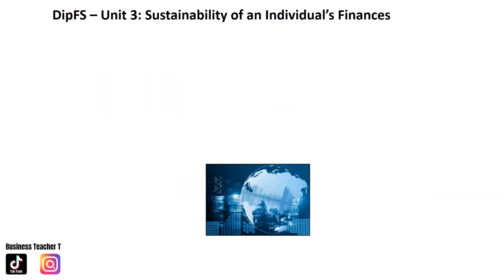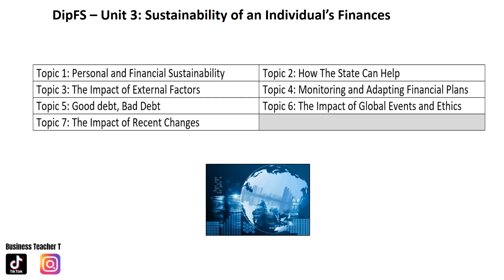You've now moved on from Unit 1 — immediate and short-term, reviewing the purpose of money, the personal life cycle and much more — and Unit 2, which focused on medium and long-term savings products. Unit 3 will introduce you to reviewing financial resources and how individuals may become financially sustainable, and how changes in circumstances and external factors may impact on them. You'll also look at borrowing, the cost of borrowing, managing that, and planning finances for the future.